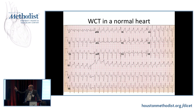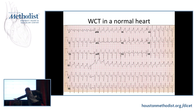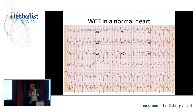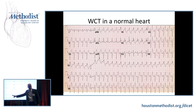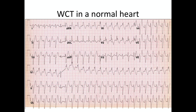An example of VT in a normal heart: tachycardia with right bundle branch block pattern and left anterior fascicular block — small R waves and deep S waves in leads II, III, and aVF. This is a young patient with syncope and no structural heart disease. A capture beat confirms AV dissociation and VT. This is fascicular tachycardia, also called verapamil-sensitive VT or Belhassen's VT, originating from the left posterior fascicle.